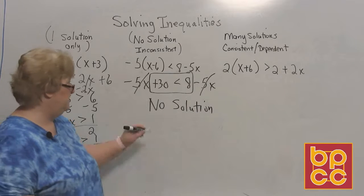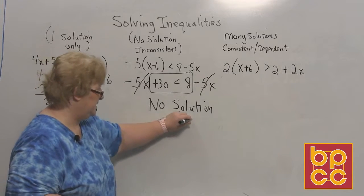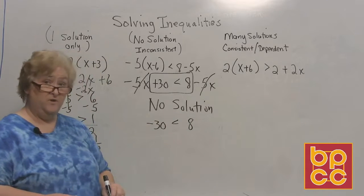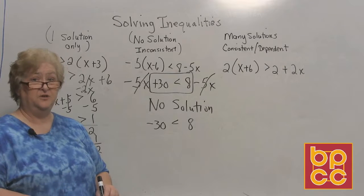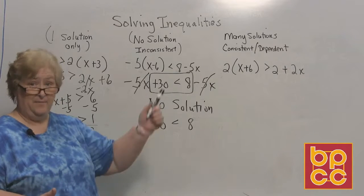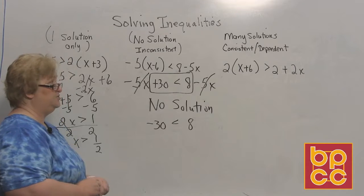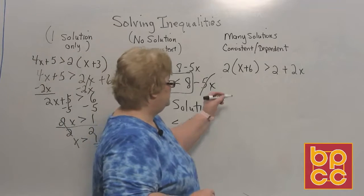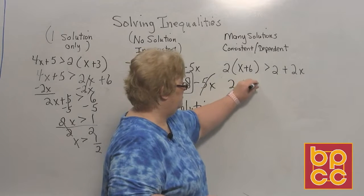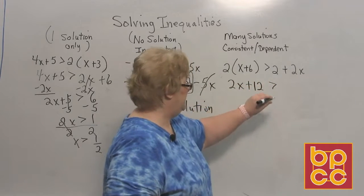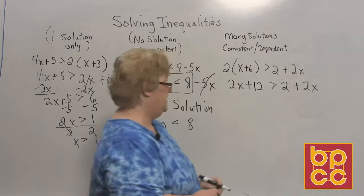Now if the answer had been a negative 30 is less than 8, that would have been a true statement, right? And then we could go with many solutions. Maybe that will happen in this next one. We'll take a look. Alright. Let's come over here and let's distribute. On this one, it looks like we have 2x plus 12 is greater than 2 plus 2x.